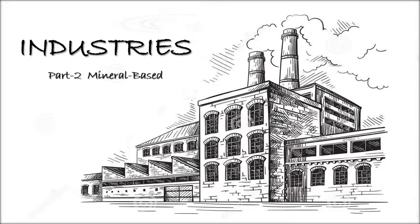Hi class 10, this is the second half of industries. In the first half we discussed agro-based industries, where the raw materials are based on agricultural inputs like how fibers are made out of silk and jute, and also agricultural inputs like groceries, fruits, vegetables, and crops. We mainly focused on three industries: the sugar industry, cotton industry, and silk industry.